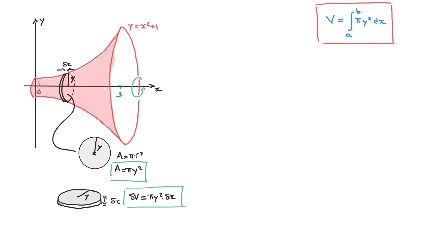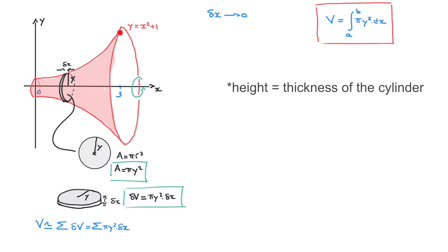If we create similar cylinders all along the length of this volume from x = 0 to x = 3, we can approximate the total volume by adding the volumes of all those very thin cylinders together. The total volume V is approximately equal to the sum of all the δv's, which equals the sum of all πy² · δx terms. In the limit when we let δx tend towards 0, we replace δx by dx.